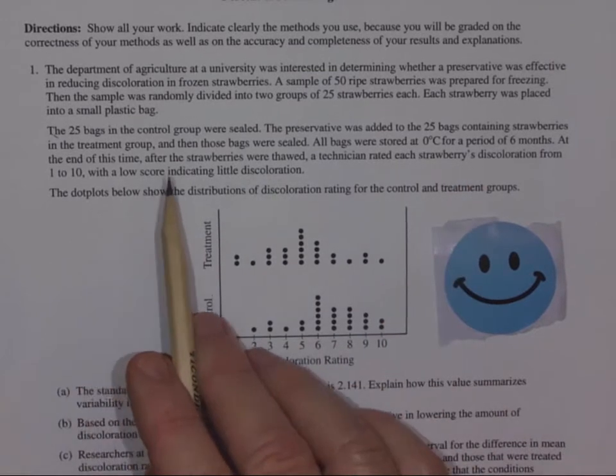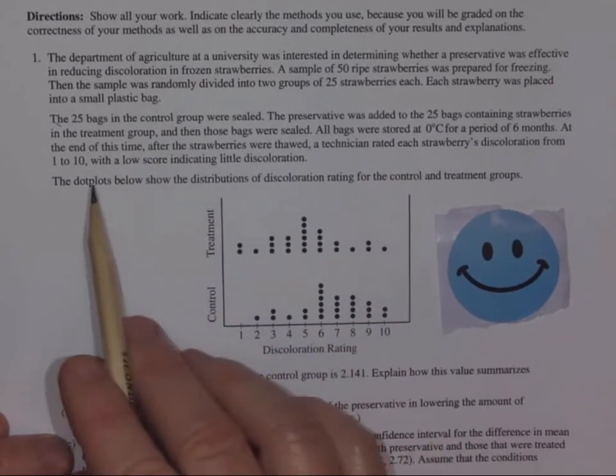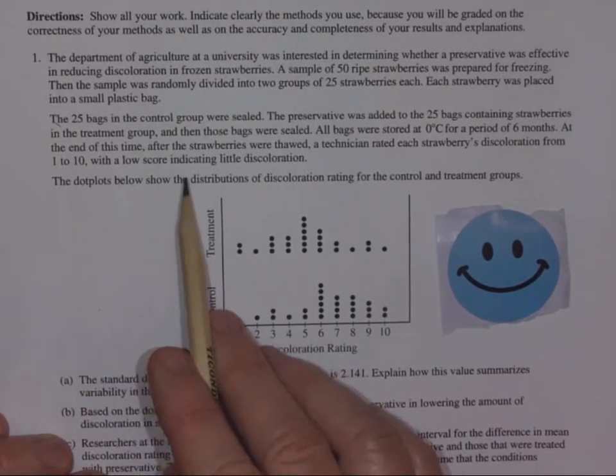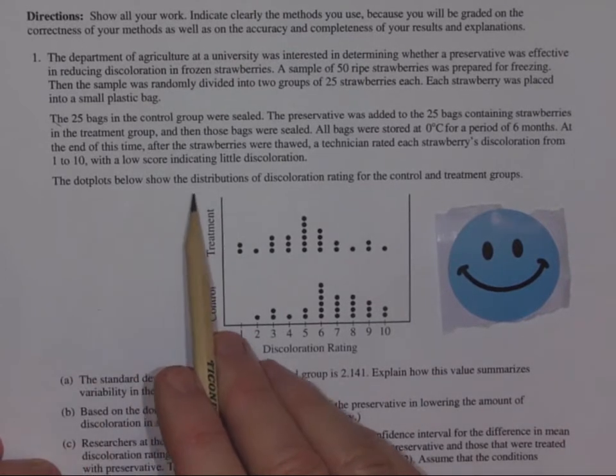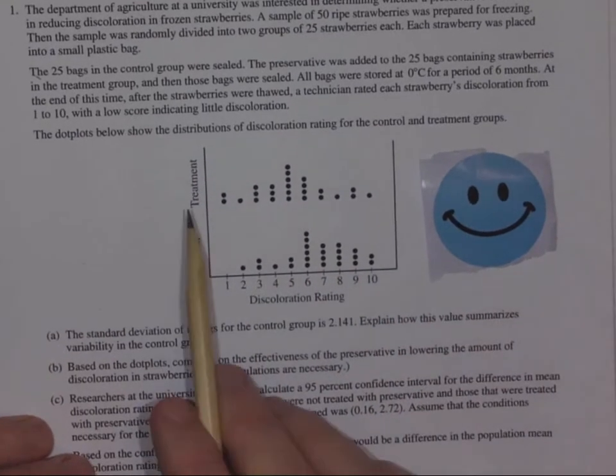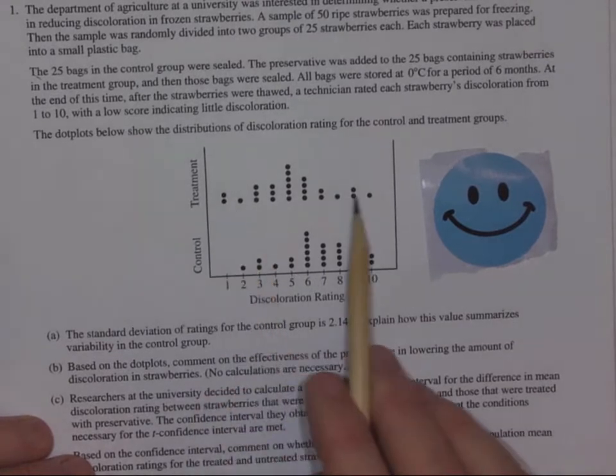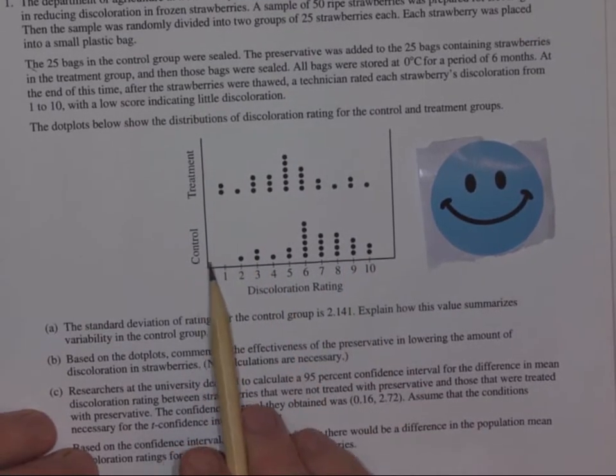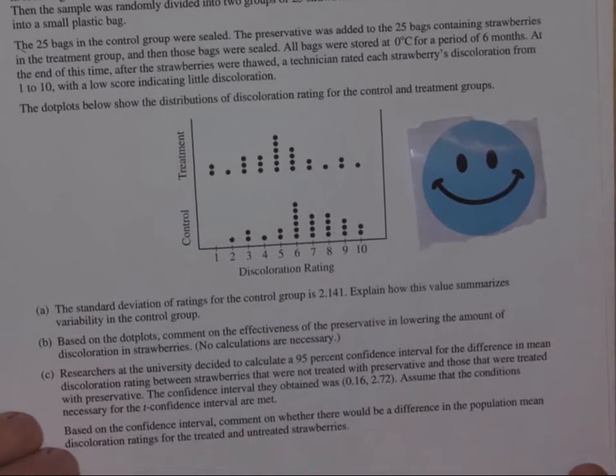At the end of this time, after strawberries were thawed, a technician rated each strawberry's discoloration from one to ten with a low score indicating little discoloration. The dot plots below show the distributions of the discoloration ratings for the control group and the treatment group. So here's the 25 strawberries that got the treatment. That's their discoloration rating there. Here's the 25 strawberries that got no treatment. They're the control group and there's their discoloration ratings.